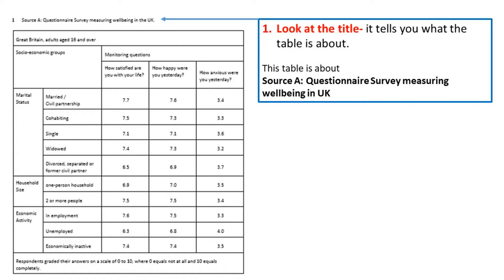It says Source A. Very often in the examination the examiner says refer to Source A or refer to Source B. When there's only one chart it is also called Source A — it means the chart which is presented to you. Sometimes Source A refers to the first chart and Source B to the second chart. If it is Source A only, it means there's only one chart.